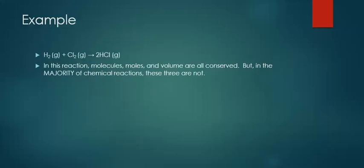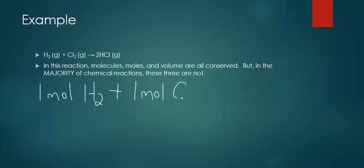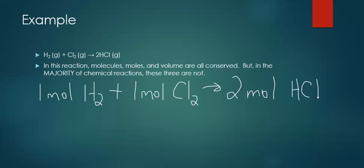Let's look at a few more examples. First, make sure the equation is balanced: H₂ + Cl₂ → 2HCl. We have one mole of H₂ plus one mole of Cl₂, and we end up with two moles of HCl. Here is a case where moles were actually conserved — we started with two moles and ended with two moles. Molecules and liters would also be conserved since they're all gases. This is an example where everything is conserved, though it doesn't happen very often.